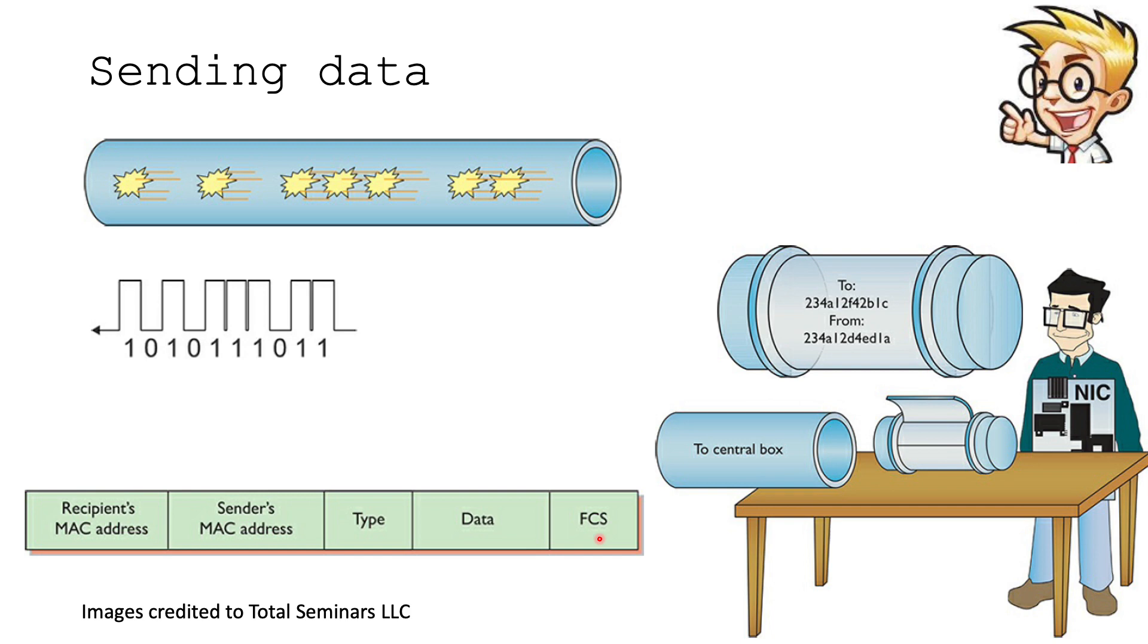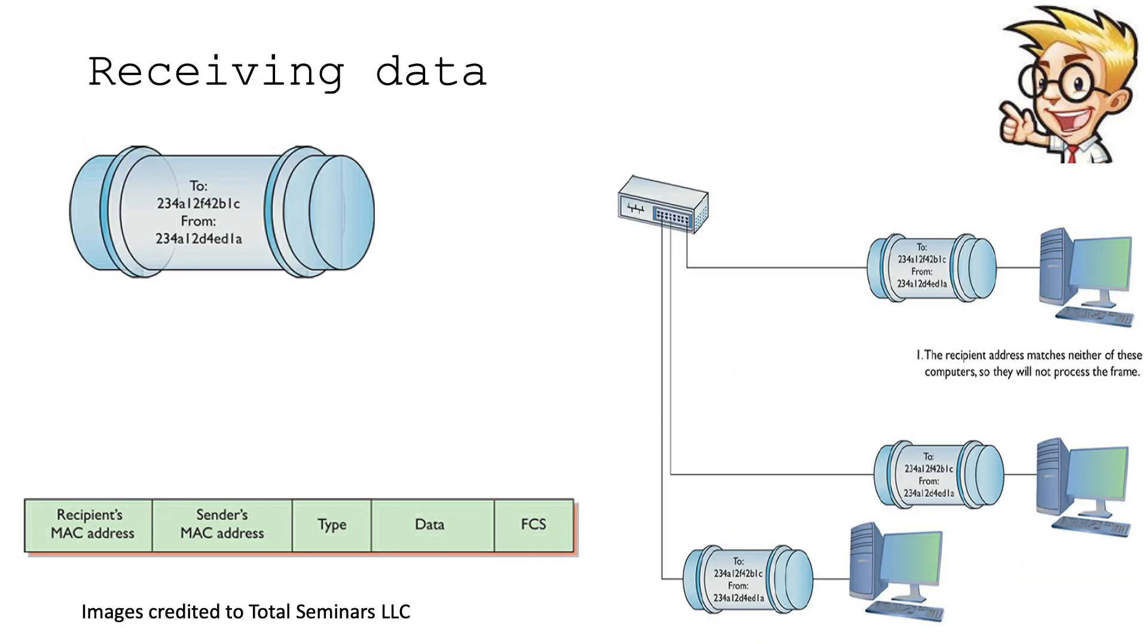This looks like a frame. We have the recipient's MAC address, sender's MAC address, the type, the data, and the error correction FCS, or we call it CRC. Let's try to visualize sending from one media access control to the other. If you have someone you're sending to, you have to say where it came from, and when it's done it'll go into its encapsulation and be sent off into the network.